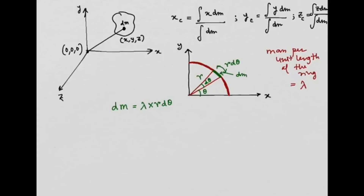Now we need to find the coordinates of this element, which is very simple. This horizontal length is r cos theta and this vertical length is r sin theta. Therefore the x coordinate of this elemental mass dm is r cos theta, and the y coordinate is r sin theta.